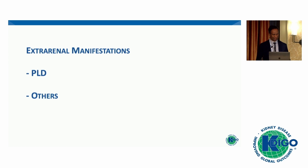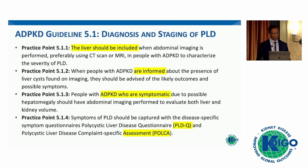Lastly, moving on to polycystic liver disease. In screening for liver cysts and polycystic liver disease, it is important to consider this at the outset when patients present at initial diagnosis, including imaging of the liver at that time with ultrasound, CT, or MRI. Similar to hematuria, it's important to talk to patients about liver cysts, explaining the natural history and the association with cystic kidney disease. The vast majority are asymptomatic, but in some cases can progress to more severe polycystic liver disease.